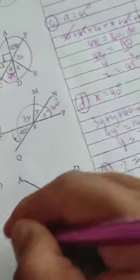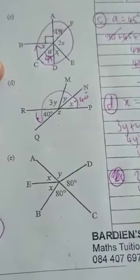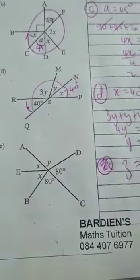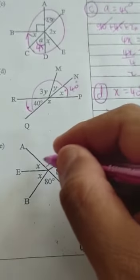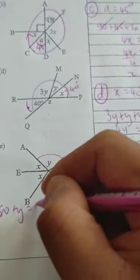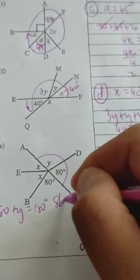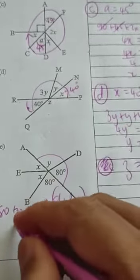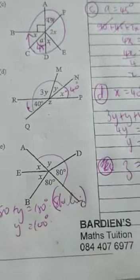The last one, E. In E, we can say that this is angles on a straight line. So 80 plus y equals 180. Straight line. So y is equal to 100 degrees.